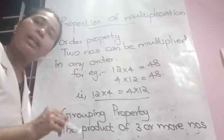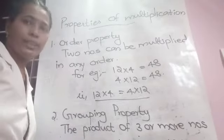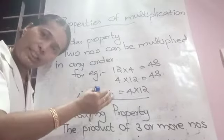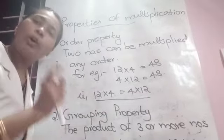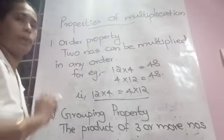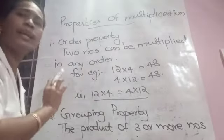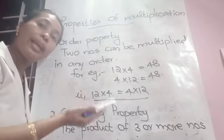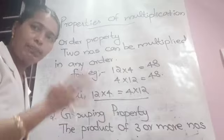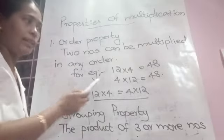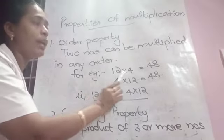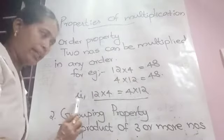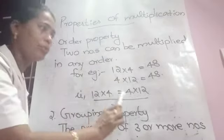Order property means you can multiply two numbers in any order you like. You can multiply the first number into the second, or the second into the first — the product remains the same. That is called order property. You can change the multiplicand and multiplier, no problem — the product will be the same. For example, 12 into 4 gives the product 48, and 4 into 12 also gives 48. So 12 × 4 equals 4 × 12.